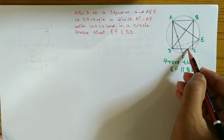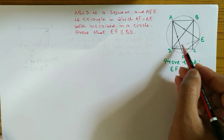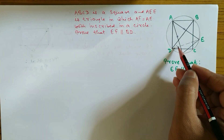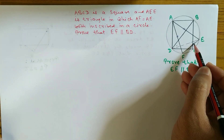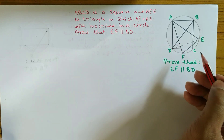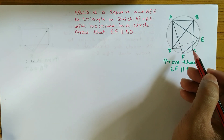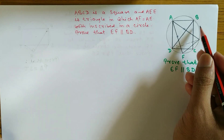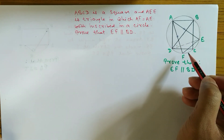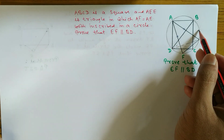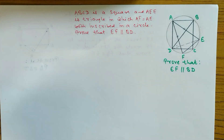To show these two lines are parallel, we have to show these two angles are equal. To show these two angles are equal, we have to show the arcs in front of them are equal — specifically arc DF and arc BE. We have to show those two arcs are equal, and we go step by step.